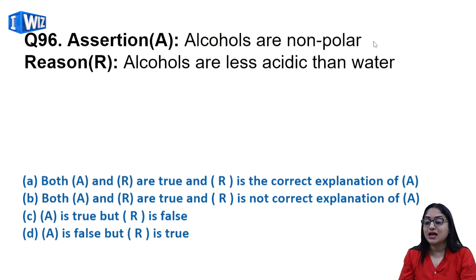Assertion: alcohols are non-polar - which is not correct. And alcohols are less acidic than water - this statement is correct. Water can give its H positive to alkoxide ion which proves that it is more acidic. So assertion is false but reason is true, D is the correct answer.